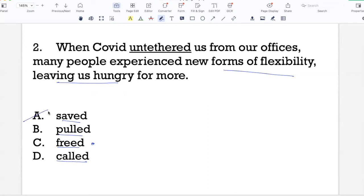COVID did not pull us from our offices in the context of the sentence. Again, I could use pull in this context if I'm saying that I was pulled out of the fire. So again, it would mean that there was a dangerous situation and I got lucky. So not B. And called doesn't make sense at all because it's not that COVID could call us from our offices.